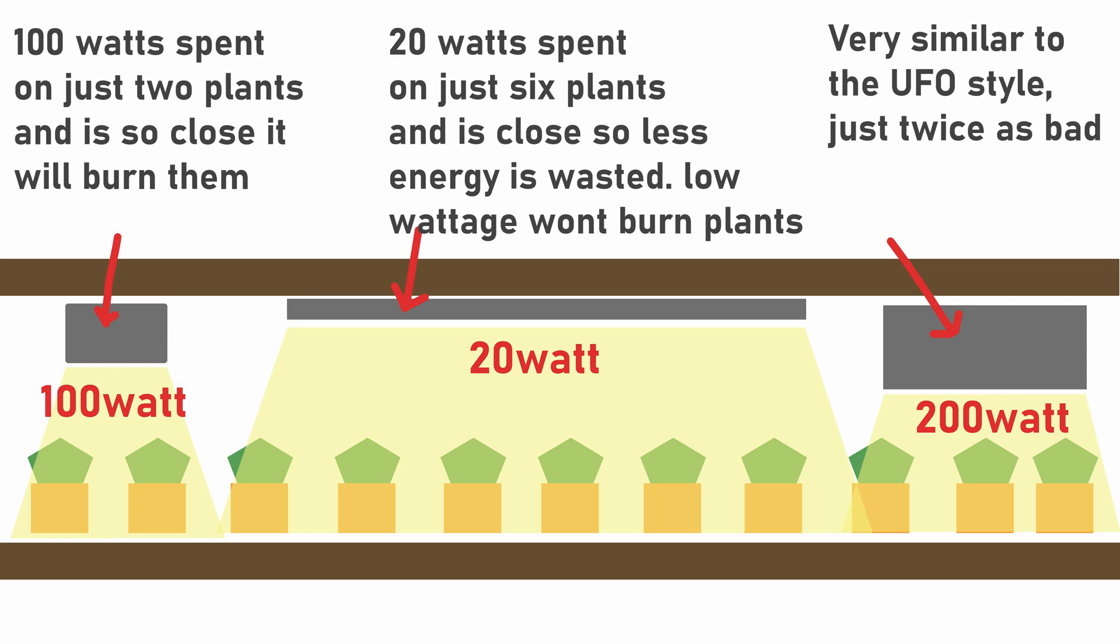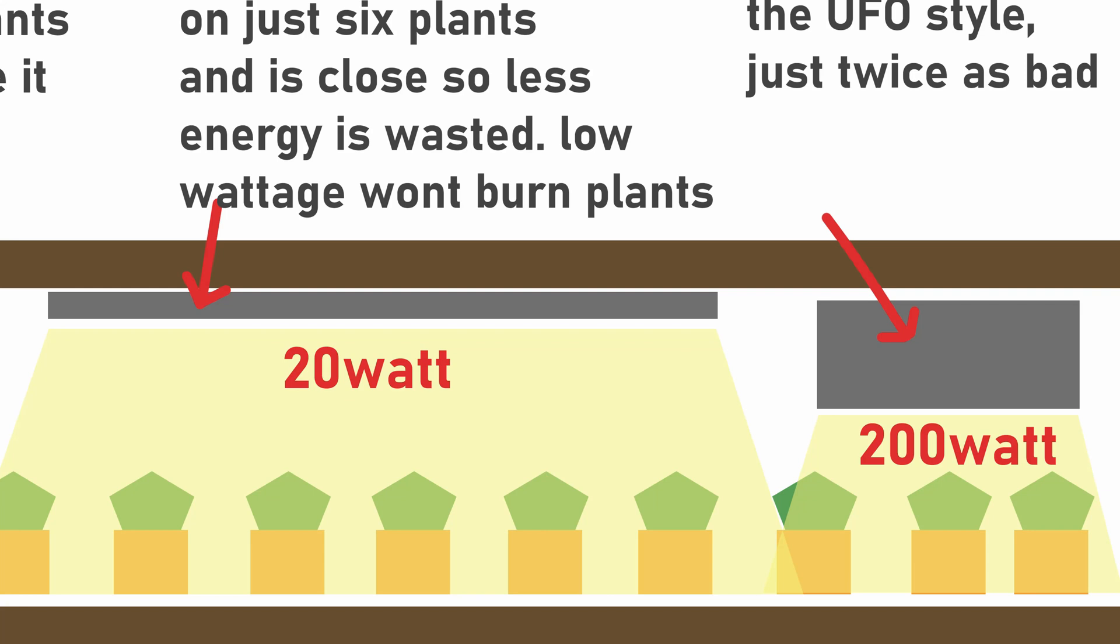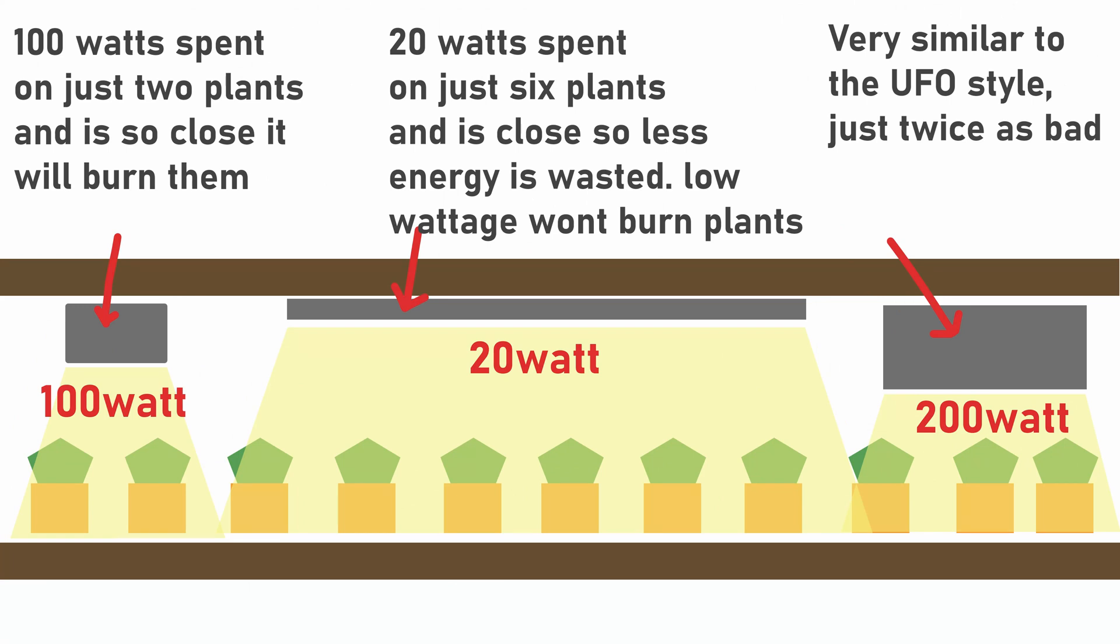Now moving to the right one more time you can see the really high wattage like 200 watt brick style LED lights would just be overkill and would not work at all. This is basically twice as bad as UFO lights and you're just wasting a ton of energy just to kill two plants.